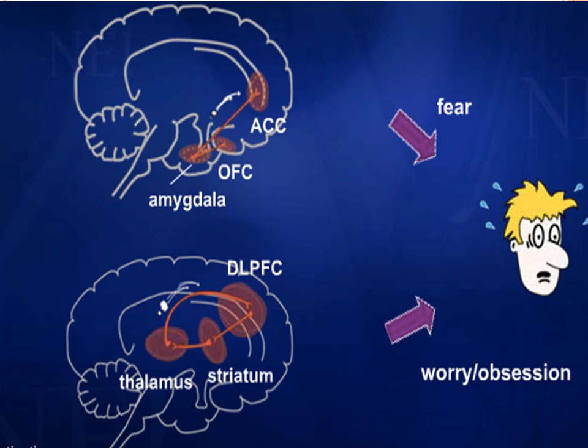For the worry loop, we have the DLPFC, or the dorsolateral prefrontal cortex, which is also called the governor of the brain because it heads off most of the executive functions, as well as the striatum and the thalamus, which are mostly associated with sensory relays.